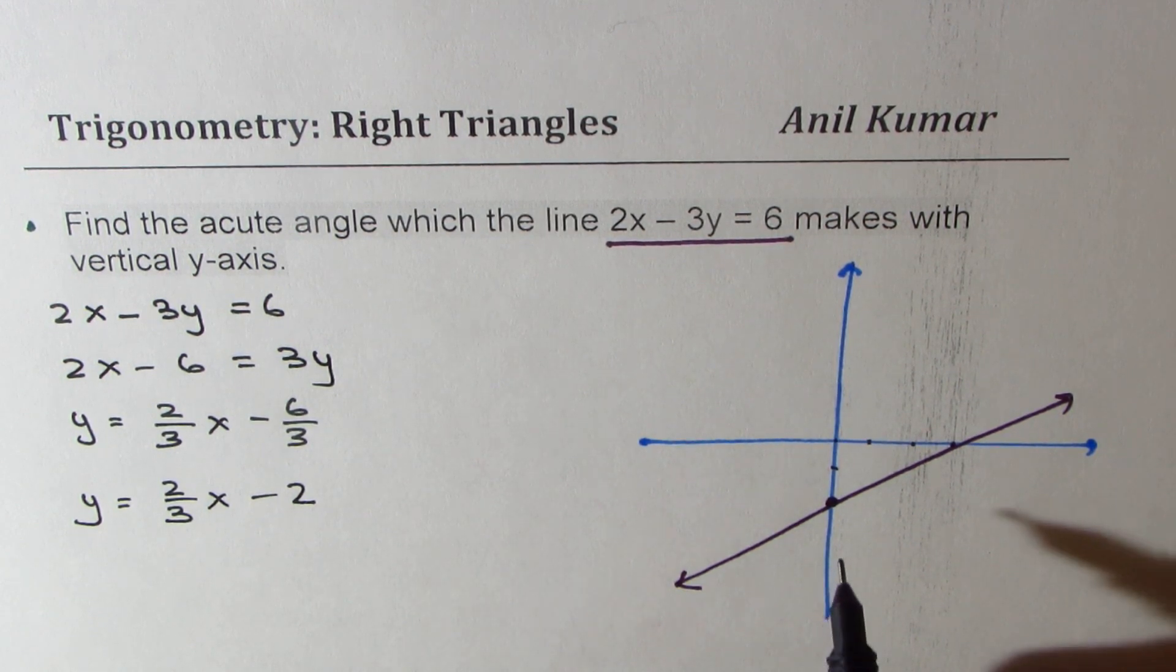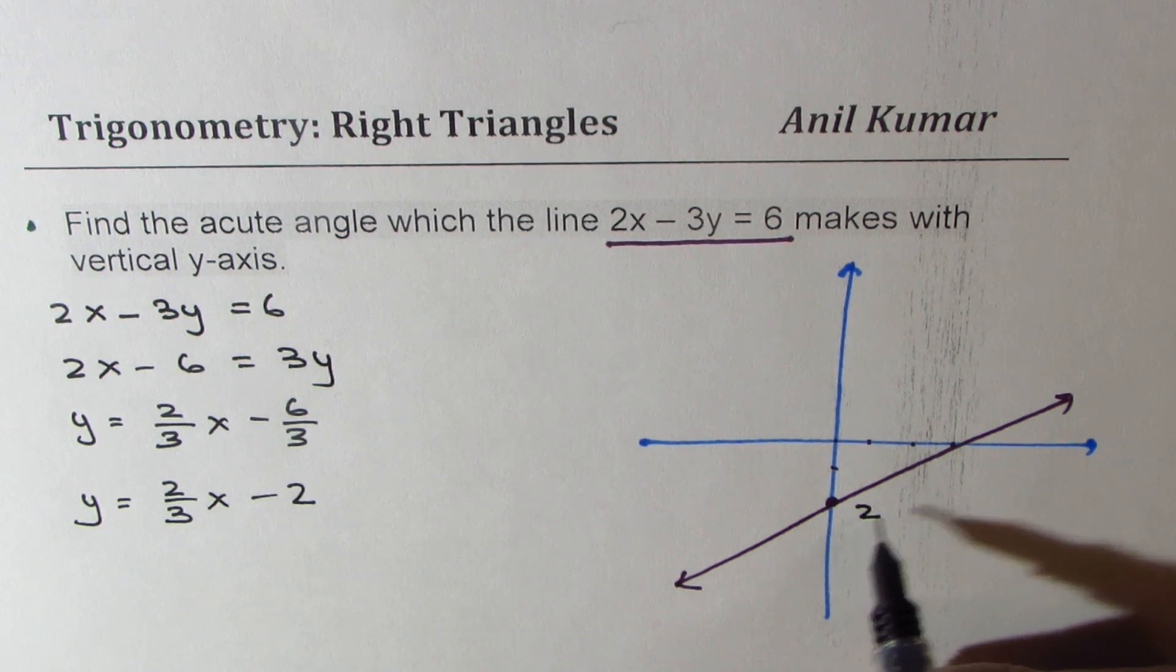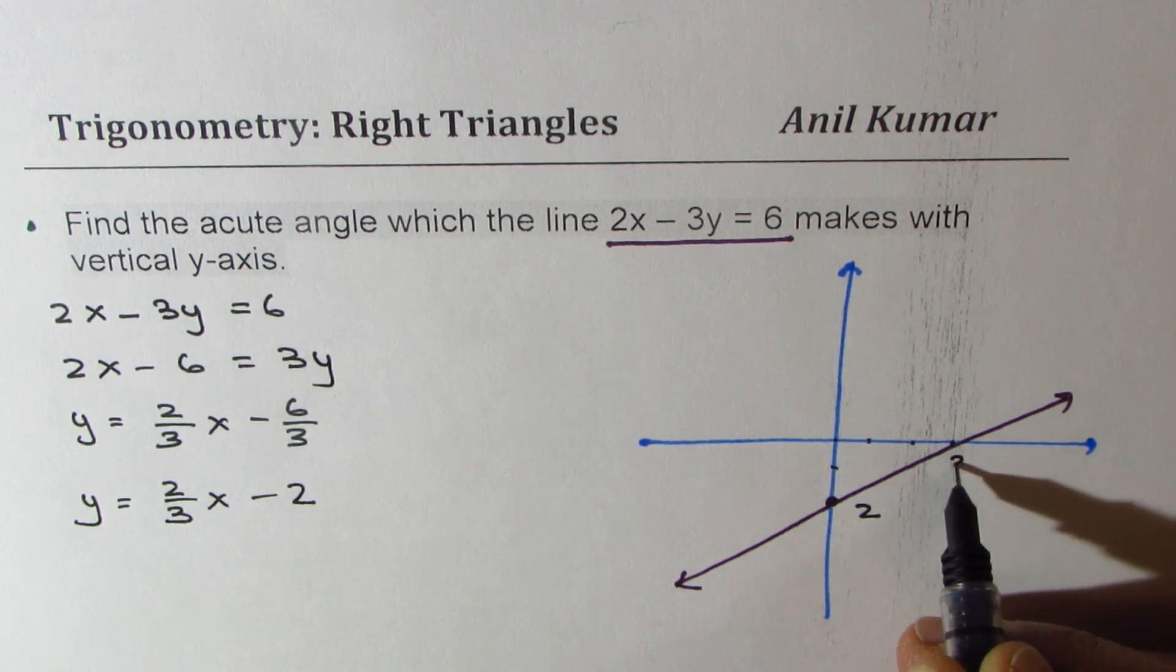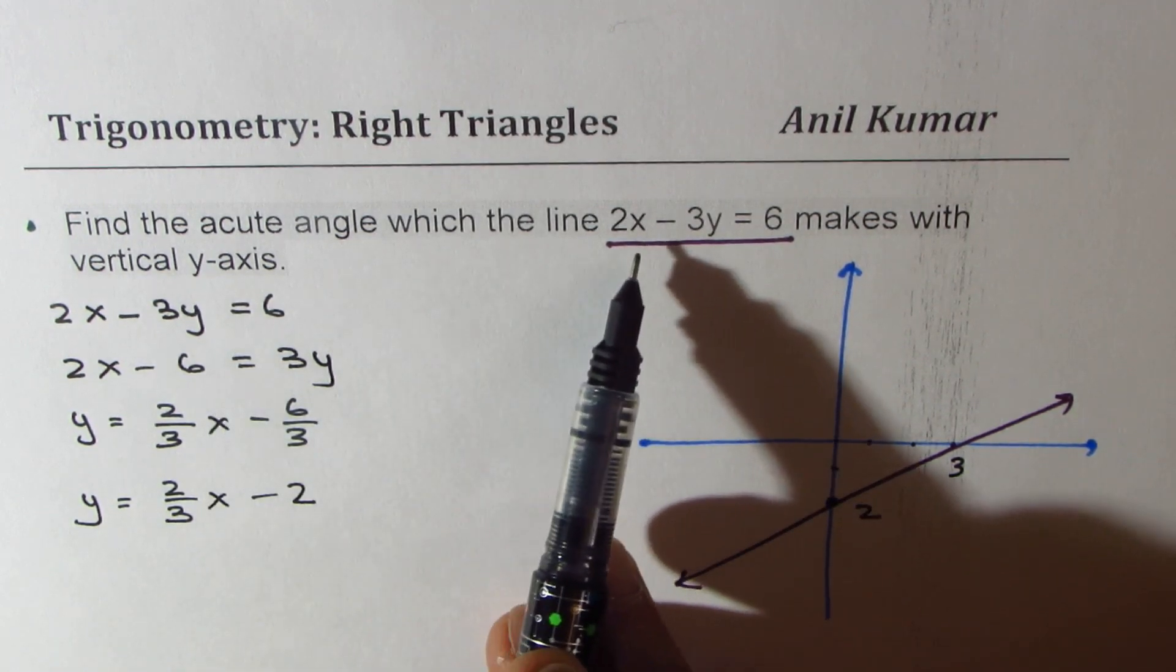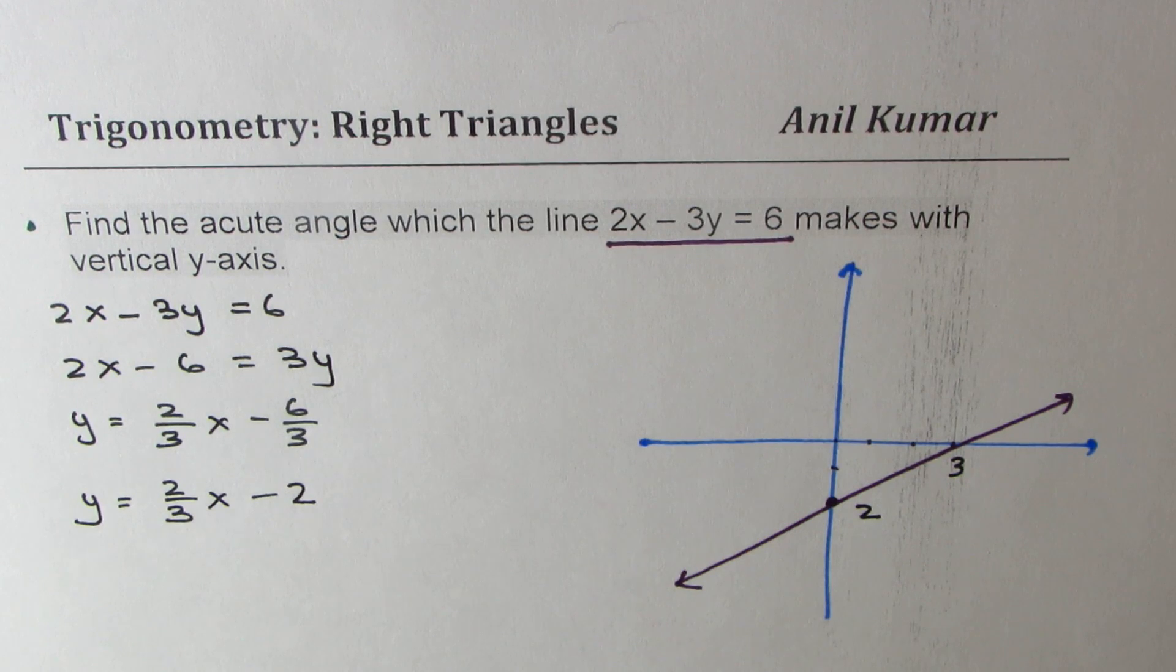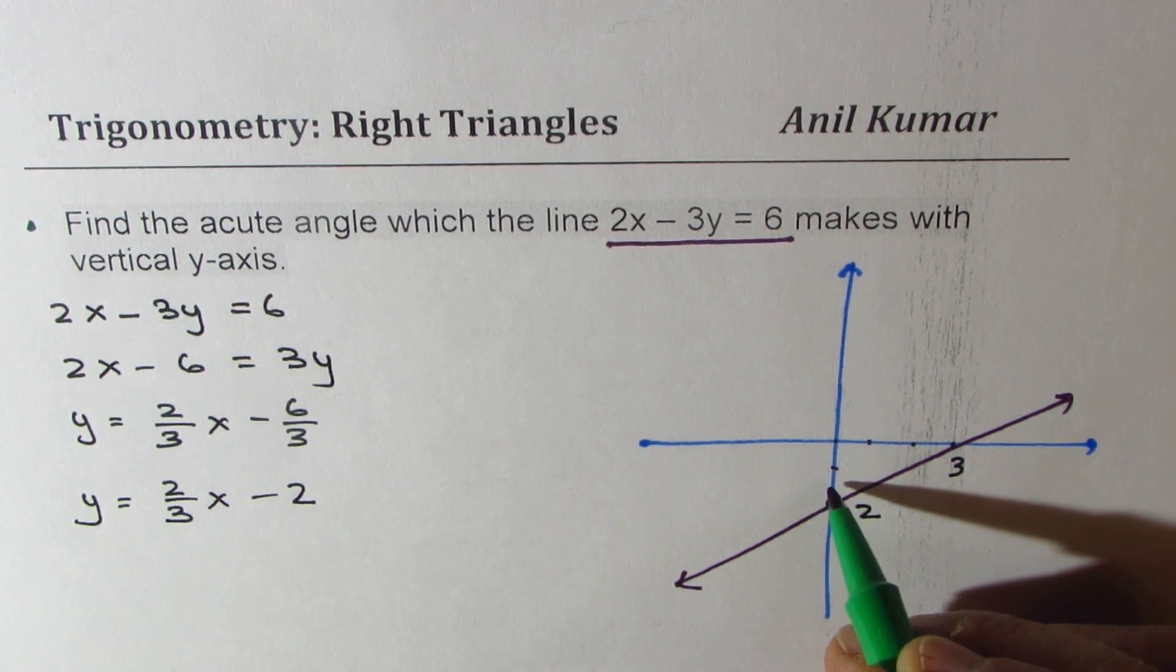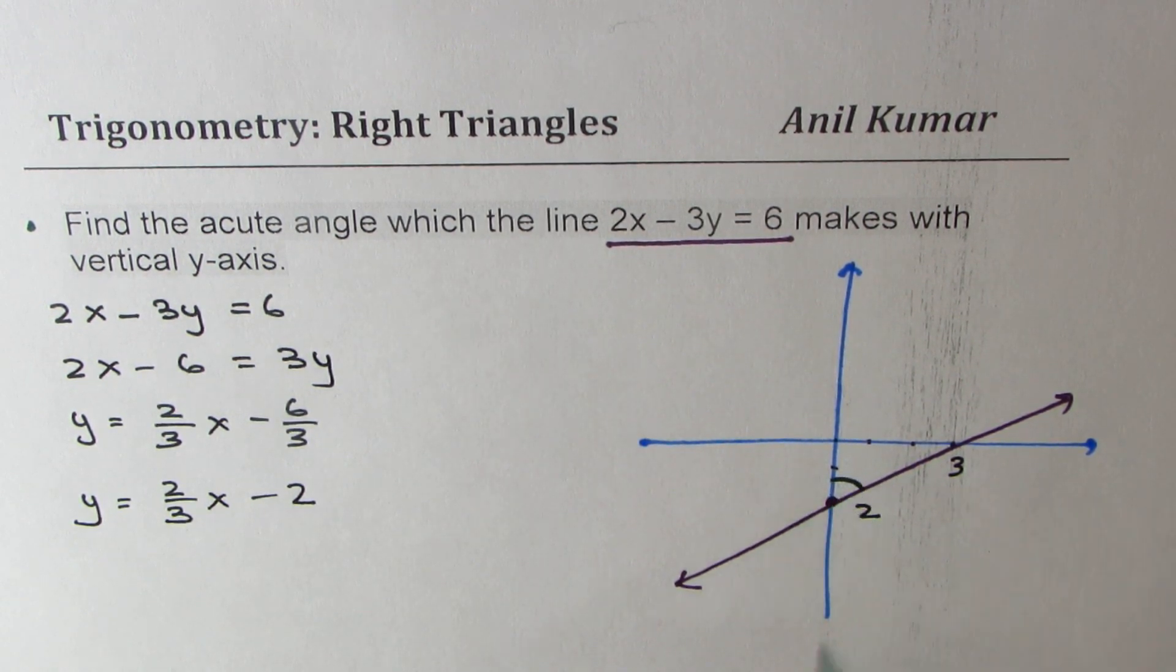So you've also seen how to sketch a line. So this y-intercept is 2 and we just figured out that this should be 3. When we say find acute angle which this line makes with y-axis, from the question you can visualize that the acute angle really is this angle. We need to find this angle. Let's call this angle as theta.